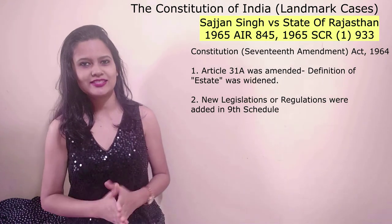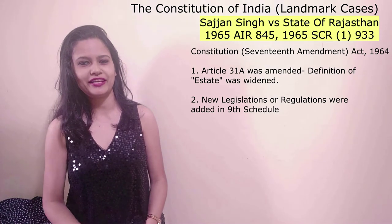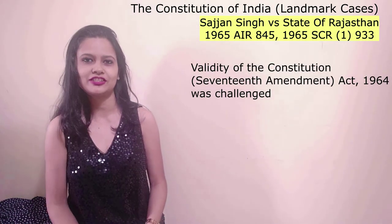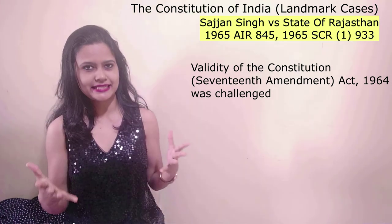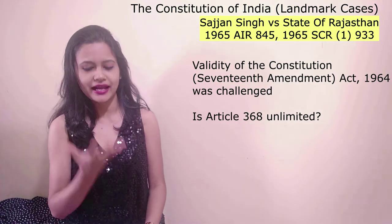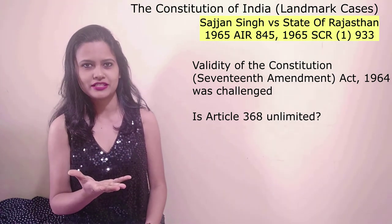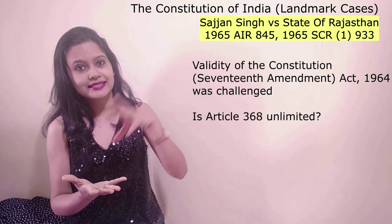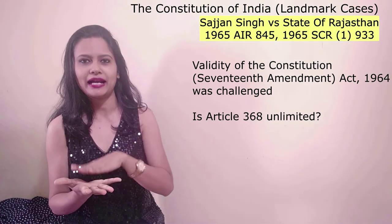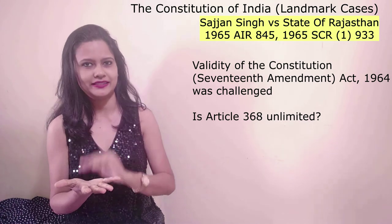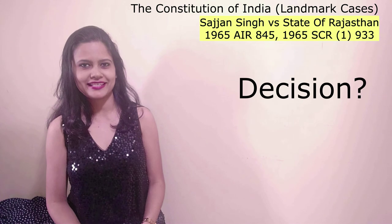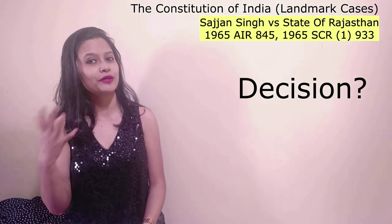In the present case of Sajjan Singh versus State of Rajasthan, the Constitution 17th Amendment Act was challenged in the apex court. The Supreme Court again had to take a decision on whether, under Article 368 of the Constitution, Parliament has the power to amend any part of the Constitution, including Part 3 — the fundamental rights guaranteed to people.